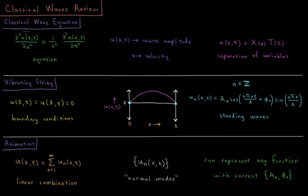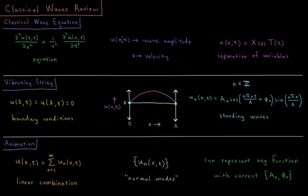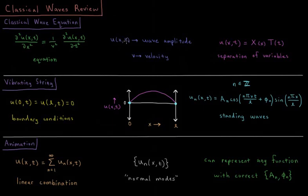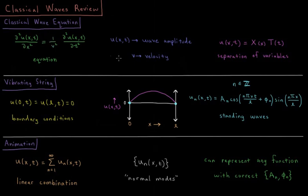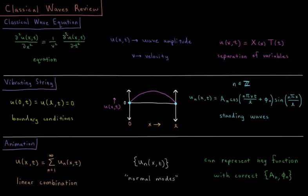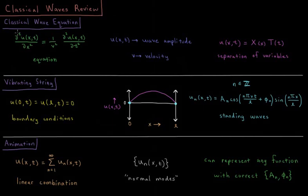We start with the classical wave equation, the equation that says for a given amplitude of a wave u, which is a function of position and time, the second partial derivative with respect to space is equal to 1 over the velocity squared times the second partial derivative with respect to time. Any function for which this is true can be a classical wave.